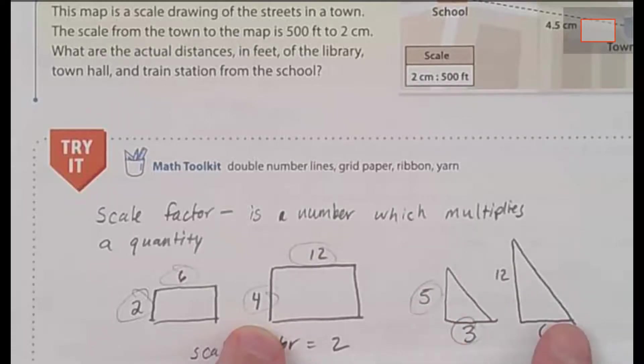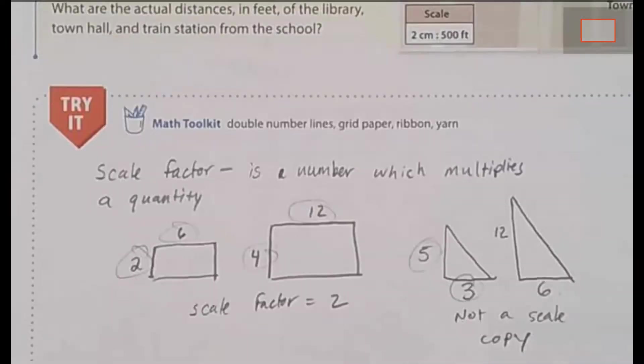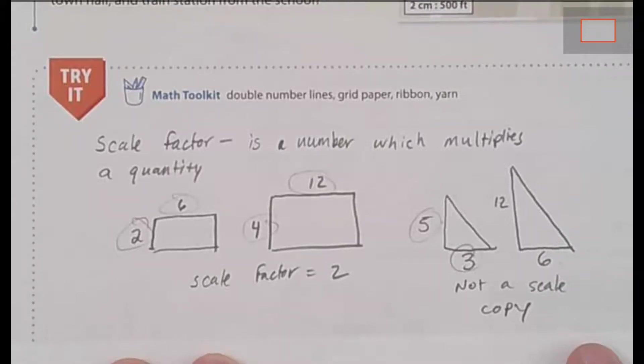Now, if you'll notice in the triangles here, we've got sides of 5 and 3 and 12 and 6. Well, 3 times 2 does give us 6, but 5 times 2 doesn't get us 12, so that is not a scale copy. Take a moment and make sure that you have this written down in your notebook.